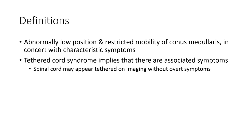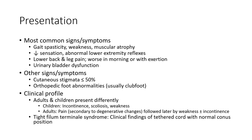Definition: Abnormally low position and restricted mobility of the conus medullaris in concert with characteristic symptoms. Tethered cord syndrome implies that there are associated symptoms. The spinal cord may appear tethered without overt symptoms. Most common signs and symptoms include spasticity, weakness, muscle atrophy, decreased sensation, abnormal extremity reflexes, lower back and leg pain, worsening with exertion, and urinary bladder dysfunction.